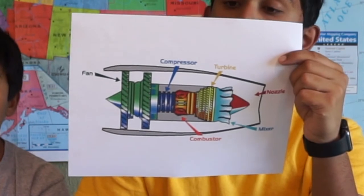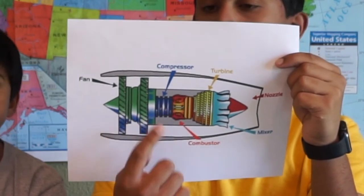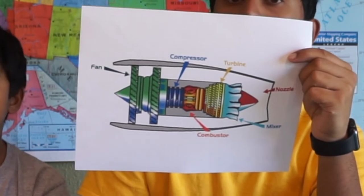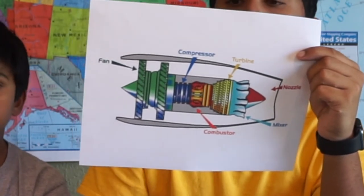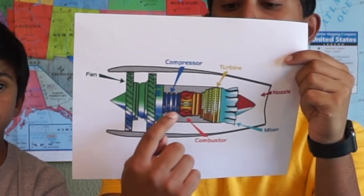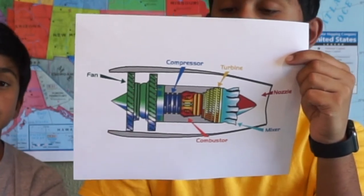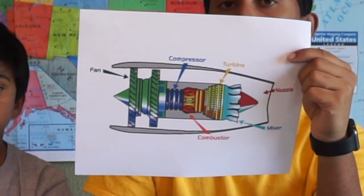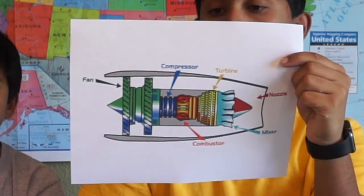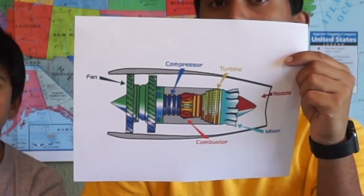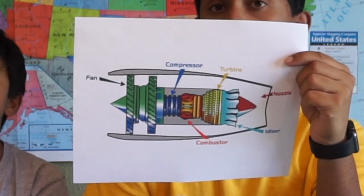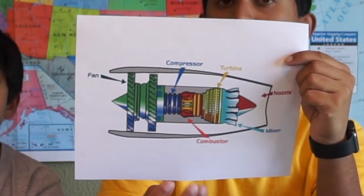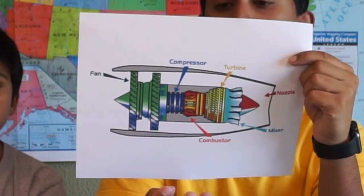The air that does enter the core first gets hit with compressors. The compressors are spinning blades that compress the air down and increase its pressure by a lot. That super high pressure air is then pushed into the combustion chamber, where it is sprayed with a little bit of aviation kerosene, or jet fuel. This jet fuel and air mixture is extremely explosive, and a small spark is created inside the combustion chamber which makes that mixture explode.